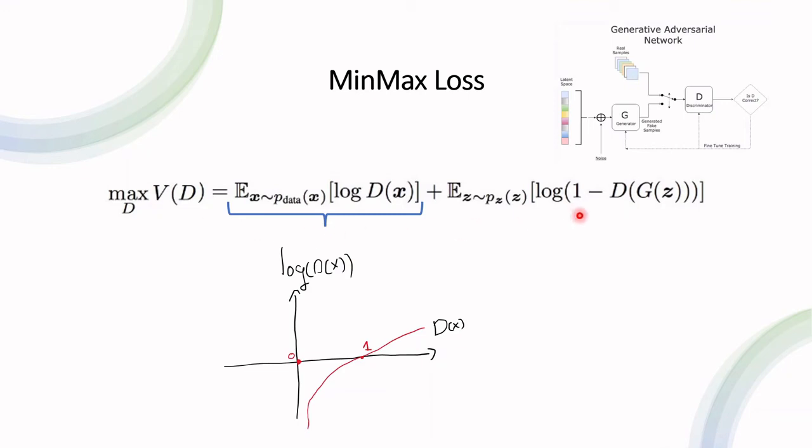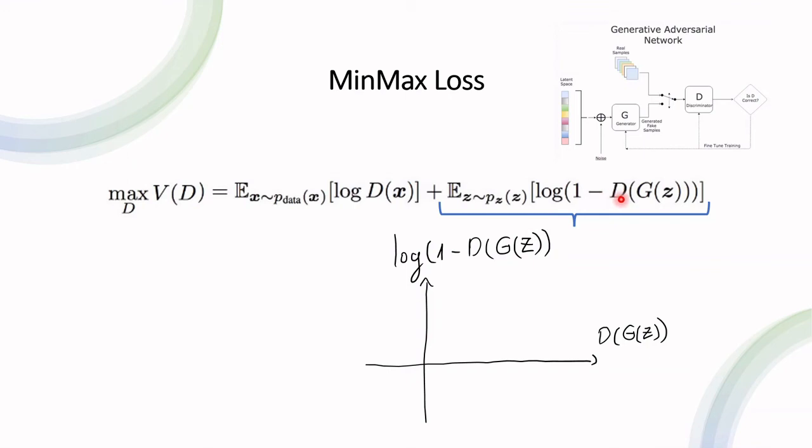If we take a look at the second term over here, these are instances that are generated by the generator, and we want the discriminator to be able to tell that they are fake, meaning we want the output over here to be zero. And again, let's plot the function log of one minus d of g of z as opposed to d of g of z, where this ranges between zero and one. If we plot this function, then it looks like this.